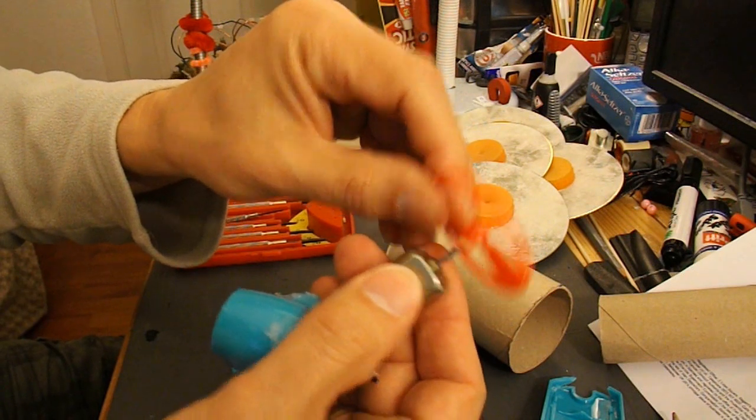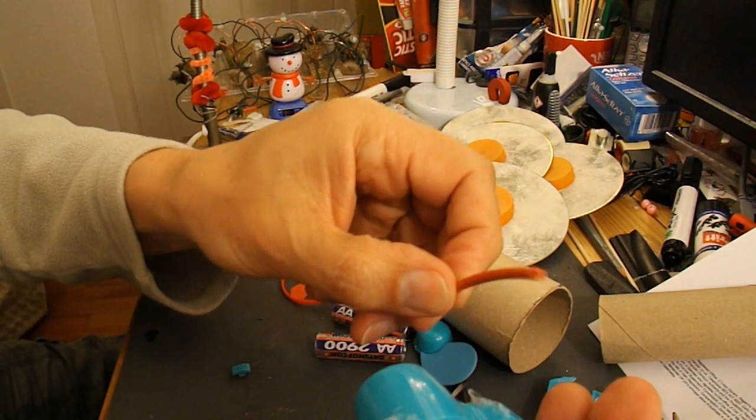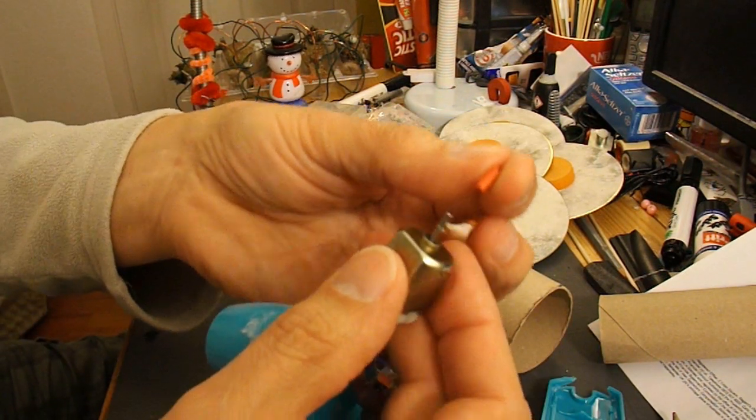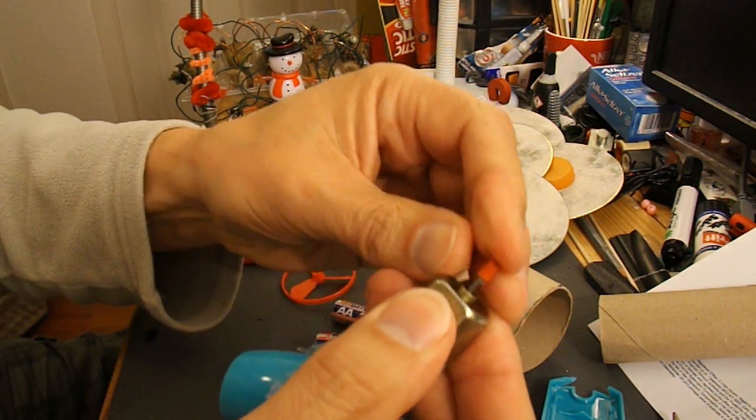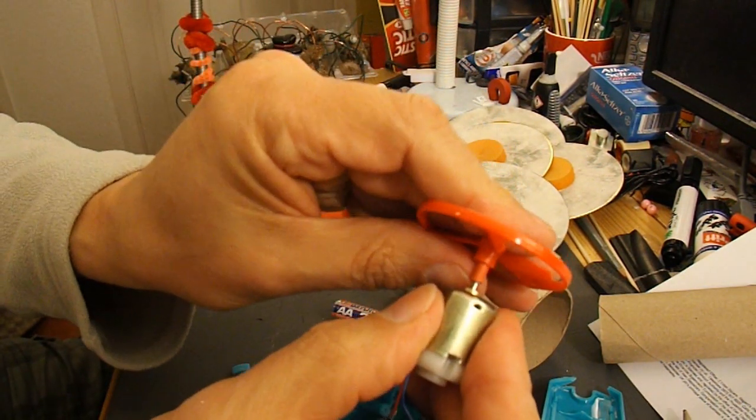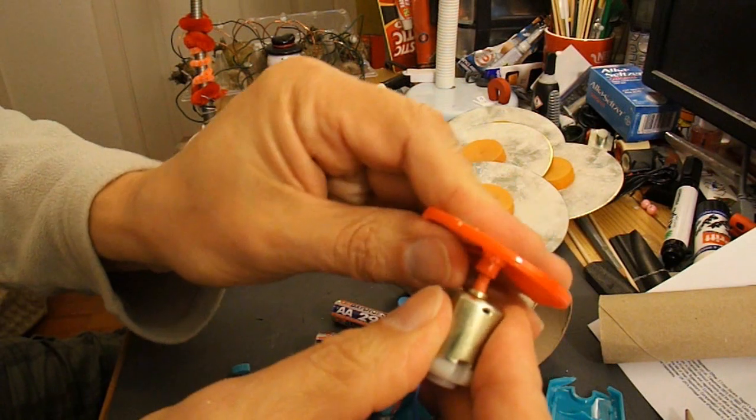That shaft is a bit too small to go in there. So that's a bit of insulation off of a bit of power cable. I've already cut a small piece off. Slide that on there to make the shaft a bit bigger. That then fits nicely on there.